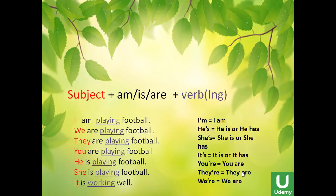So if you want to make a sentence, you would say: I am, we are, they are, you are, he is, she is, it is. To complete the sentence you need to put a verb. For example: I am playing football. Remember, the base verb is 'play,' but now it's 'playing' because it's in the present continuous. We are playing football, they are playing football, you are playing football, he is playing football, she is playing football, it is working.